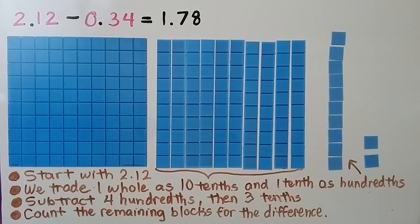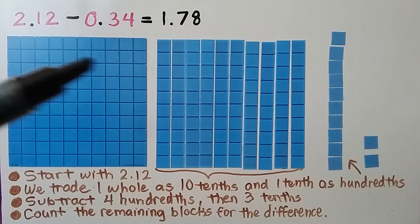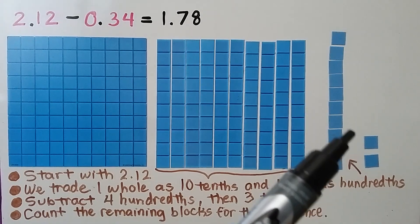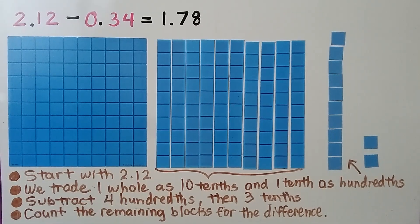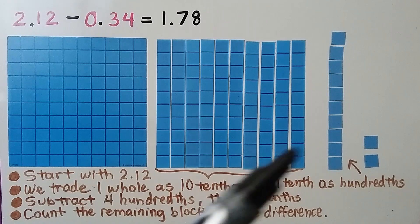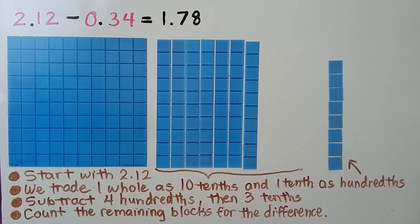Here we have 2 and 12 hundredths minus 34 hundredths. We start with 2 wholes and 12 hundredths. We trade 1 whole as 10 tenths, and we trade 1 tenth as hundredths. We subtract 4 hundredths from our hundredths, then we subtract 3 tenths. We count the remaining blocks for the difference.